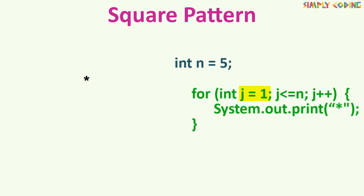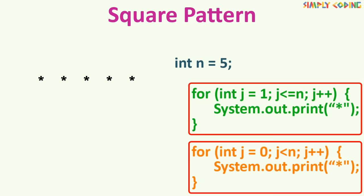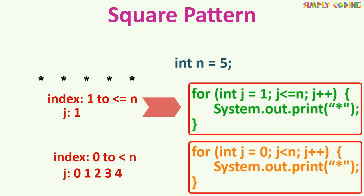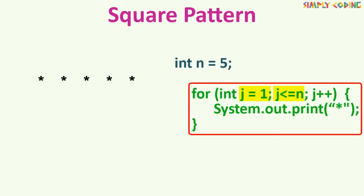The loop will start from j equal to 1 to j less than or equal to n. This loop will run 5 times and print the star 5 times. There are two ways to run a loop 5 times and you need to stick to only one: one is where you start from 1 and run the loop till less than or equal to n; the other is that you start from 0 and run till less than n. If you start from 0, j will take values 0, 1, 2, 3, 4 — that's 5 times. If you start from 1, j will take values 1, 2, 3, 4, 5 — also 5 times. I'm focusing on this because many students get confused between less-than and less-than-equal-to, which messes up the whole pattern. So pick one you are comfortable with and stick with it. We will use 1 to less than or equal to n in all our examples.